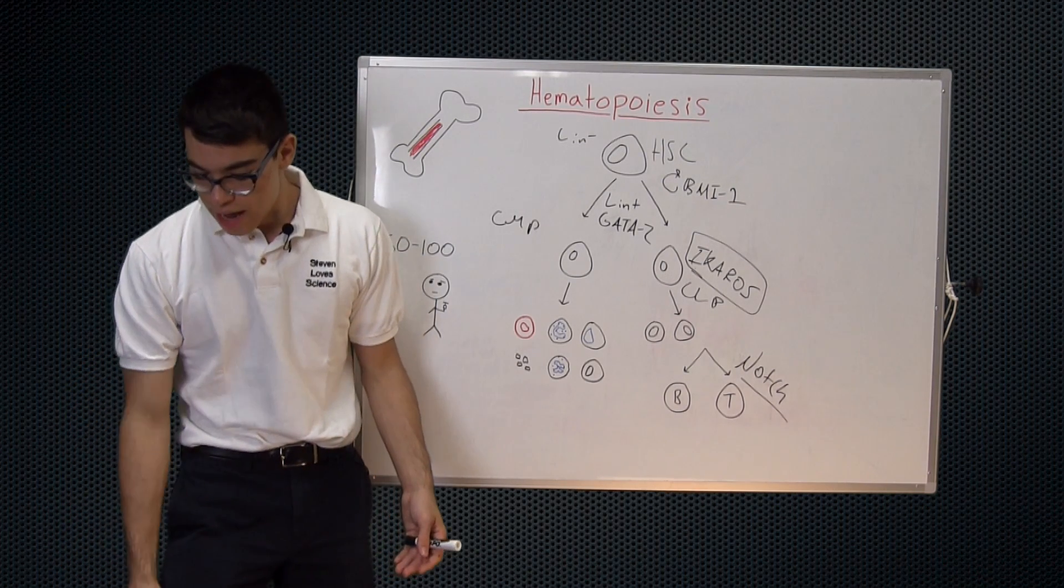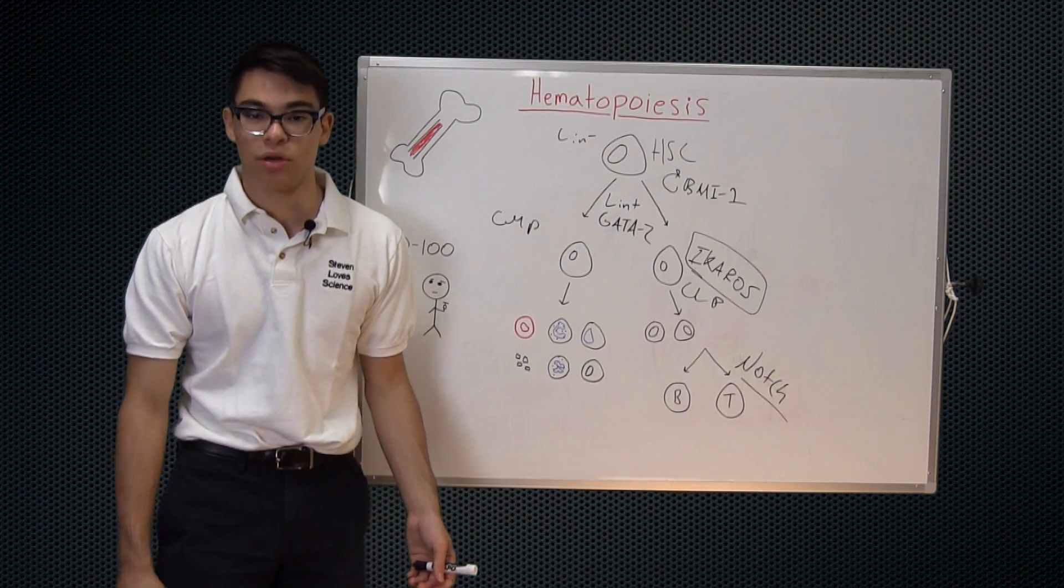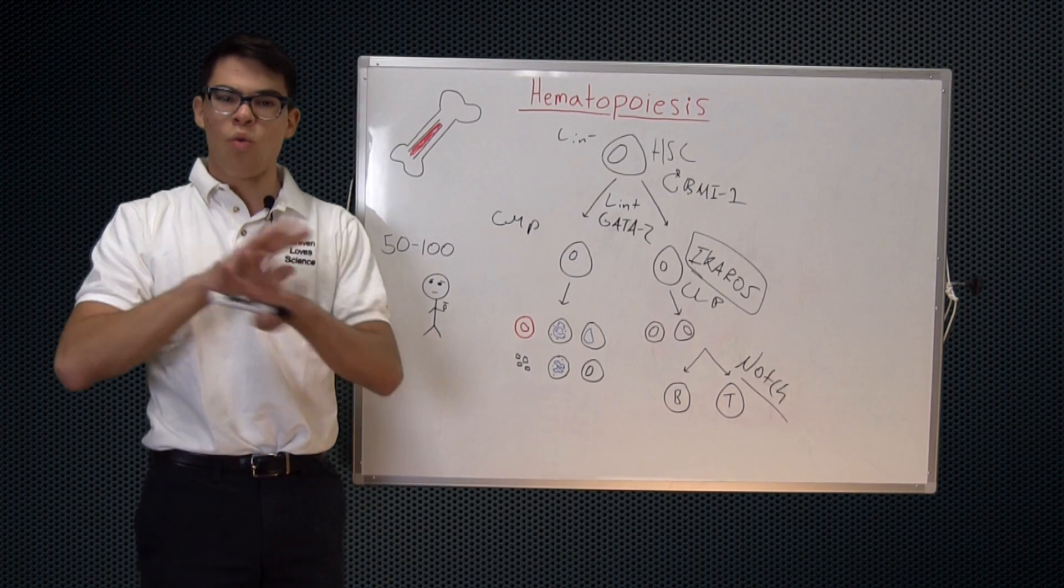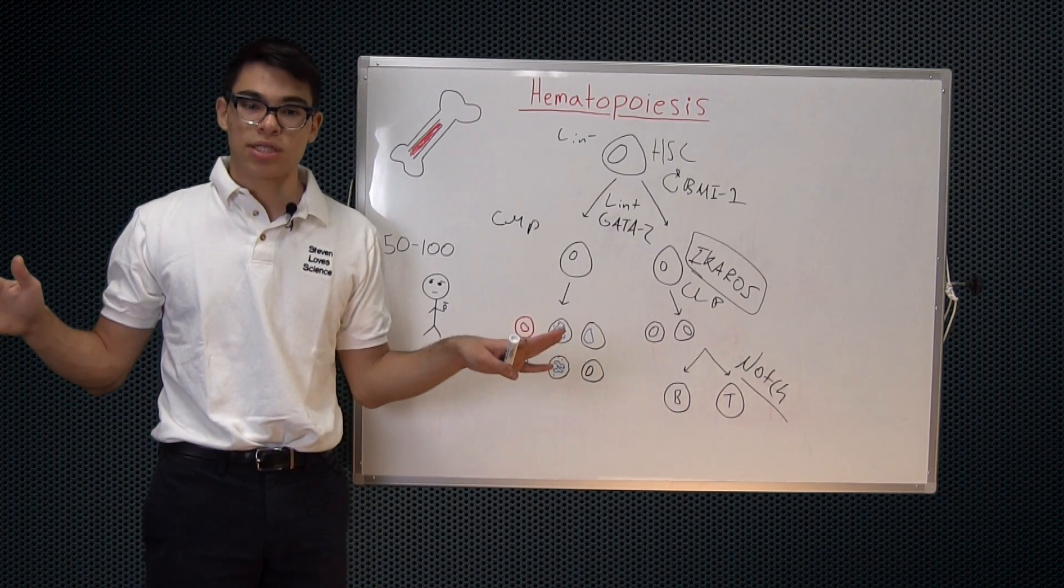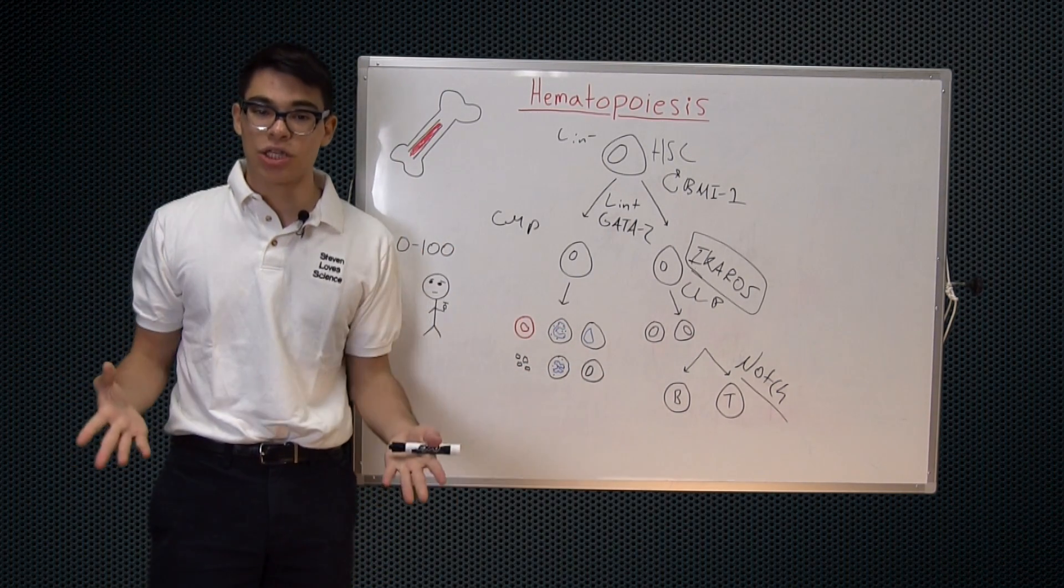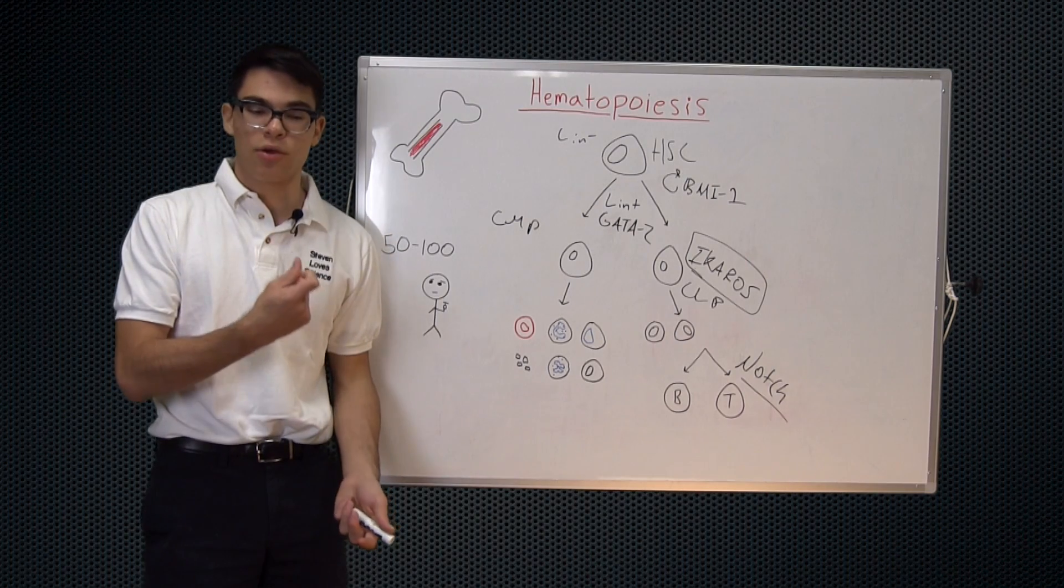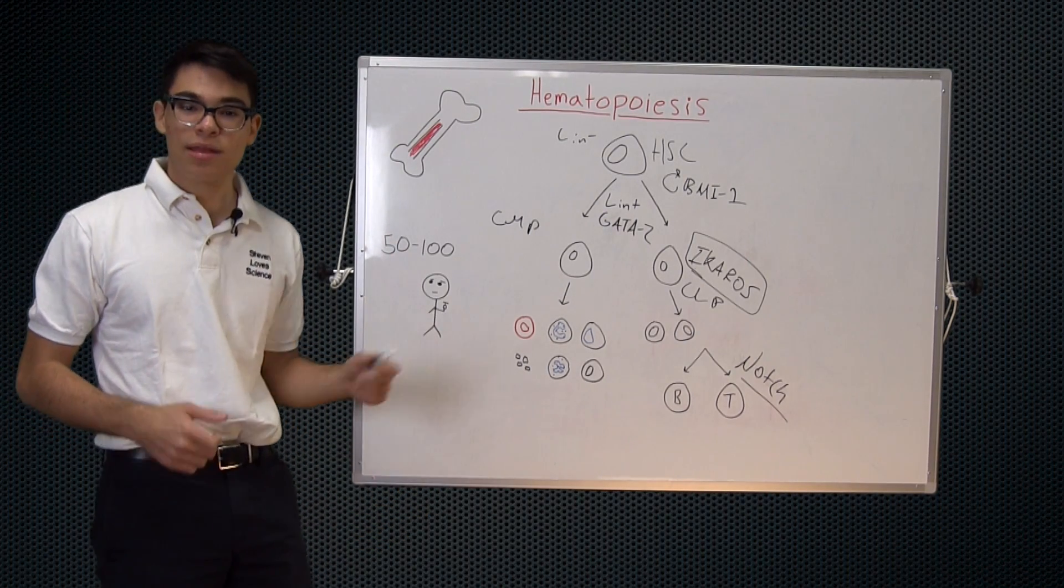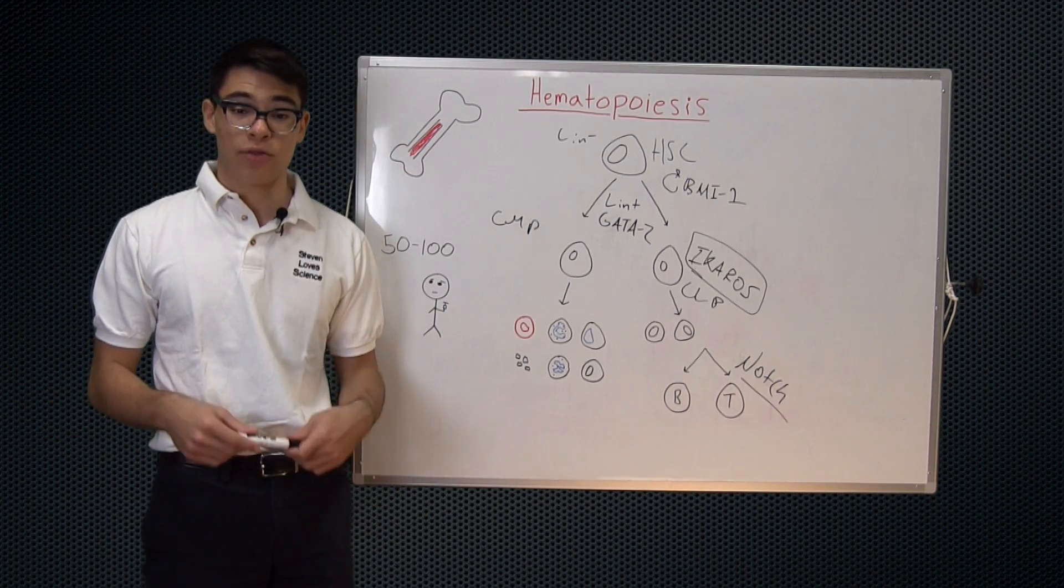So you have someone who has maybe a blood cancer. You can take some of their healthy hematopoietic stem cells from maybe their leg, keep those, wipe out their entire blood supply with radiation and then inject those 50 to 100 cells back in them. They have a completely regenerated, healthy blood supply.